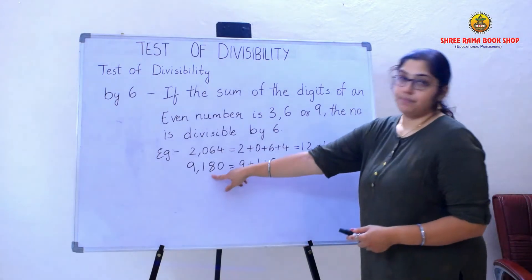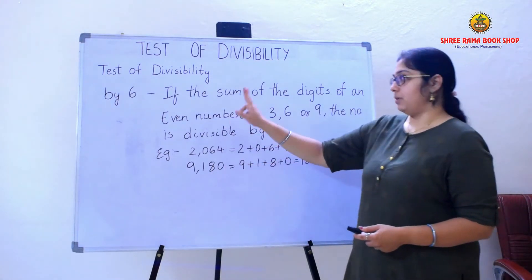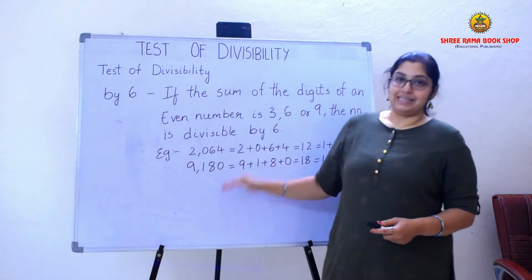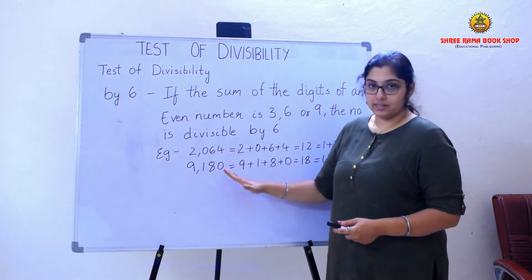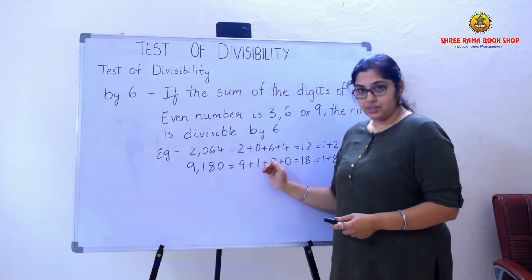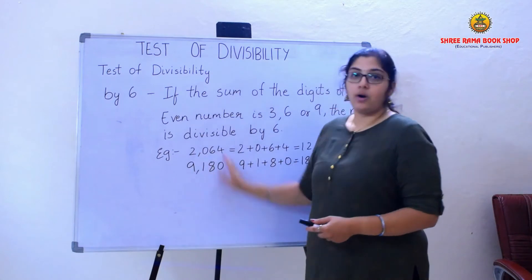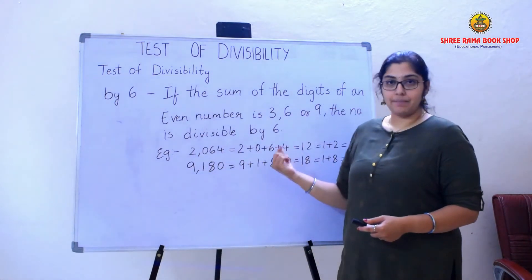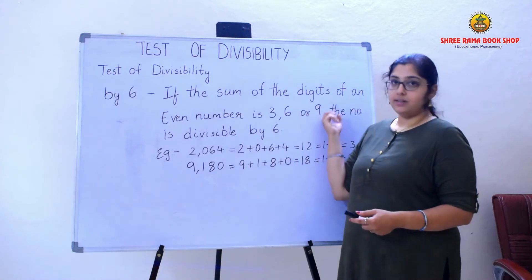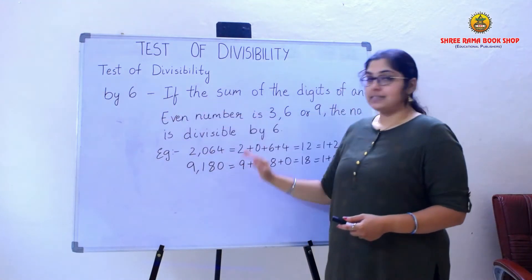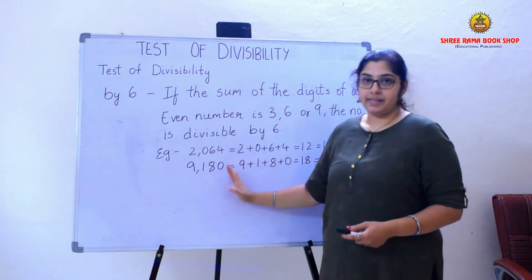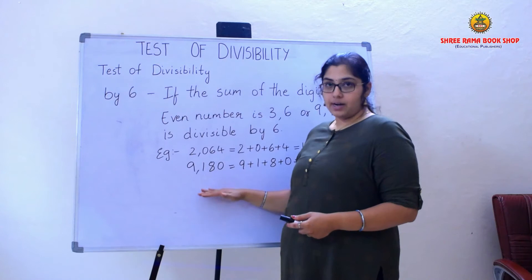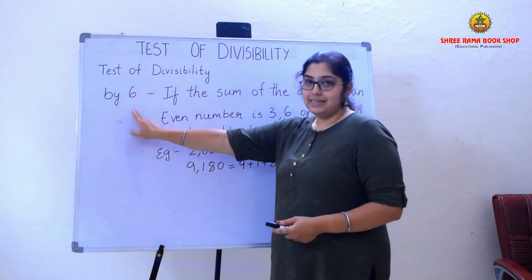I can say that this number 9,180 is divisible by 6. Children, you need to remember that to test the divisibility by 6, we need to check first whether it is an even or odd number before adding the digits. If it is an even number and you get 3, 6, or 9, then it is divisible by 6. If it is an odd number, you can stop there and directly say it is not divisible by 6.